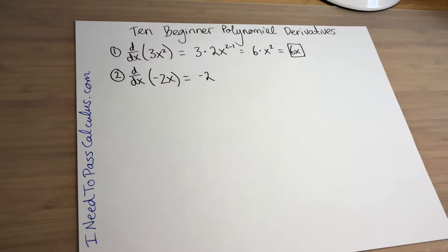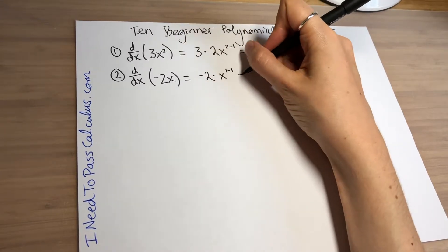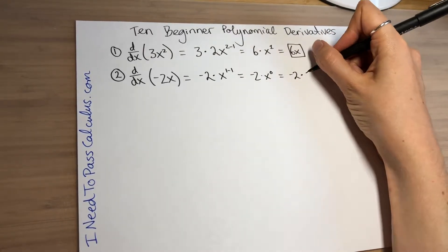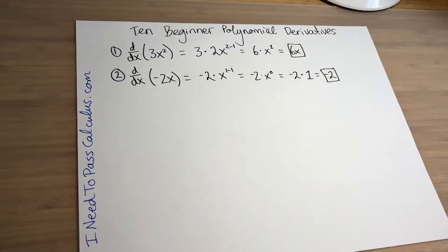The negative 2 out front gets multiplied by the exponent, which is just 1, so the negative 2 doesn't change. You subtract 1 from the exponent, getting x to the 1 minus 1, which is x to the 0, and x to the 0 is just 1 — so you end up with negative 2. Really, we're taking the derivative of y equals negative 2x, a line with slope negative 2, and the derivative gives you that slope.